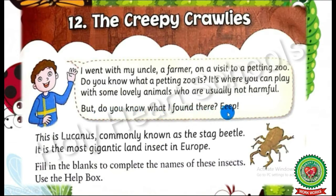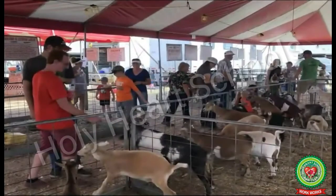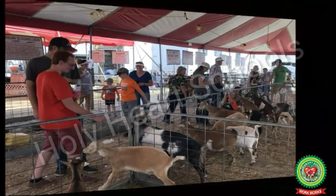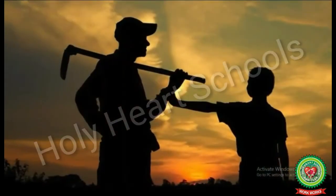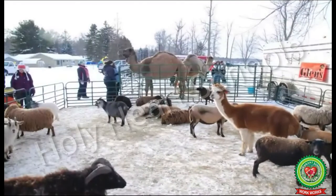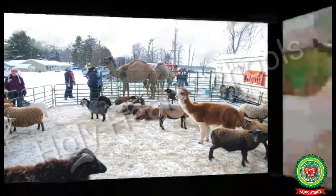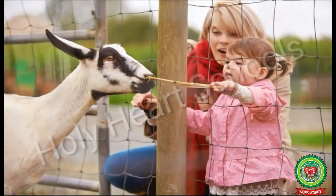In this paragraph, a boy is saying that he went to a petting zoo with his uncle who is a farmer. A petting zoo is a place where there are many harmless domestic and wild animals, and you can play with these lovely animals.